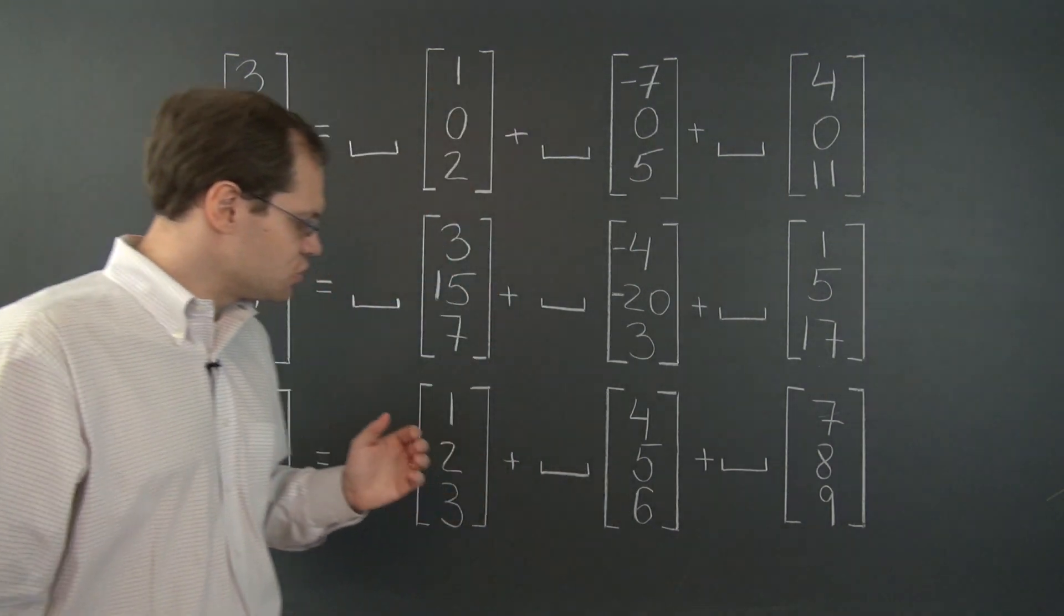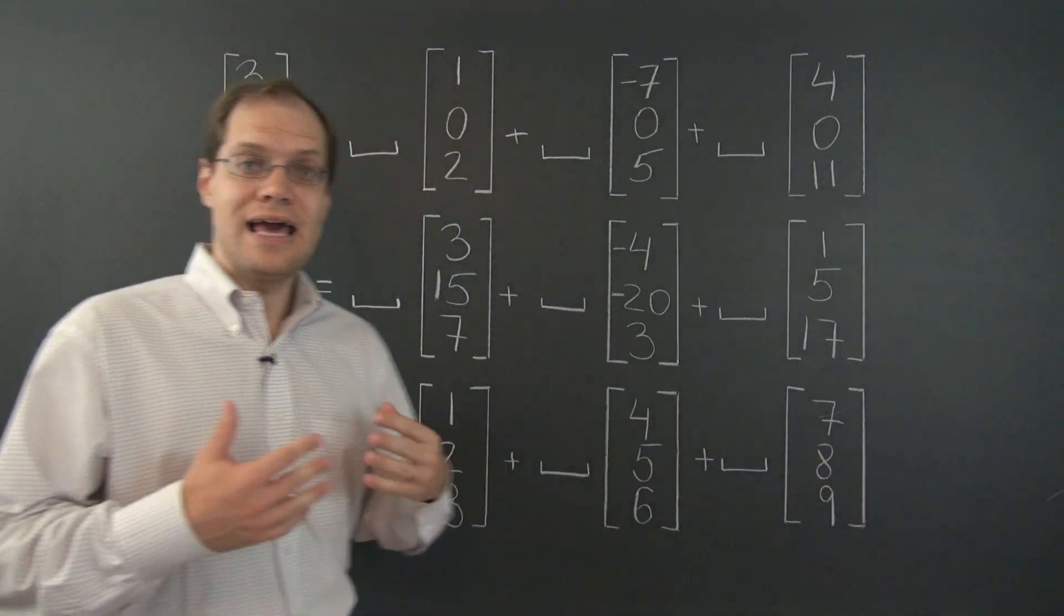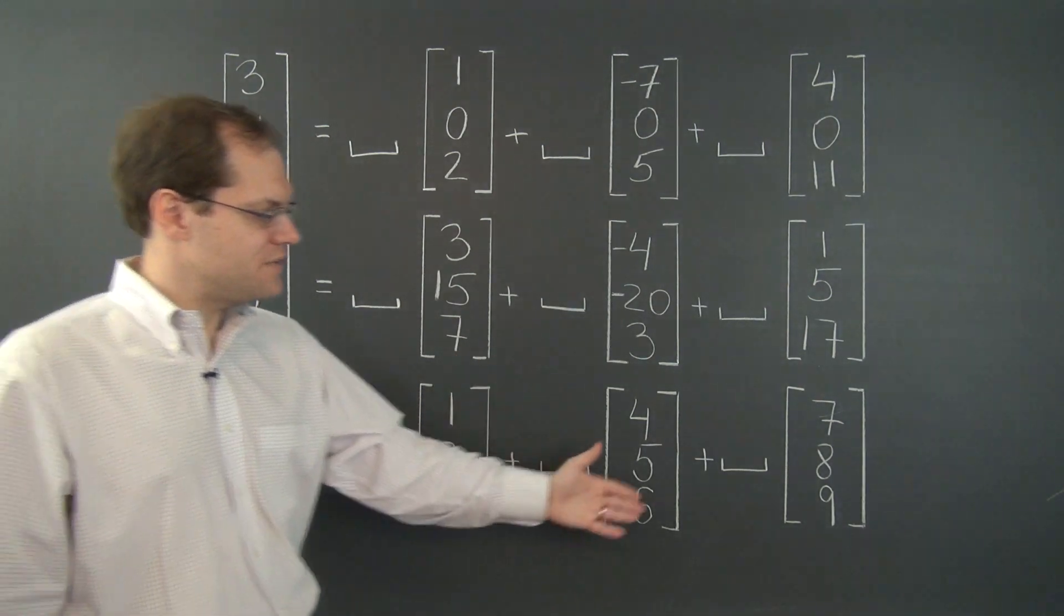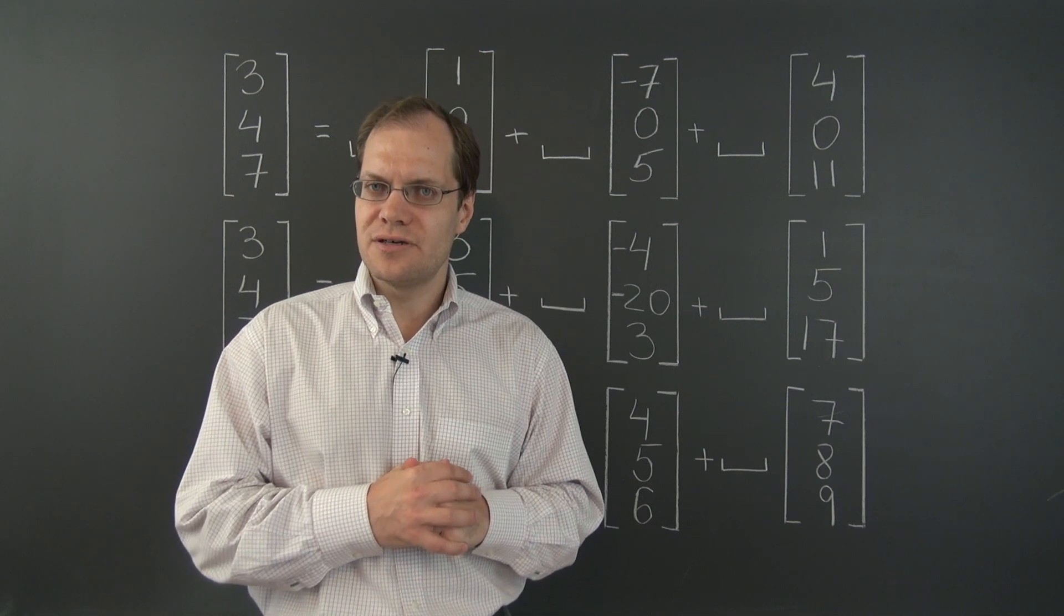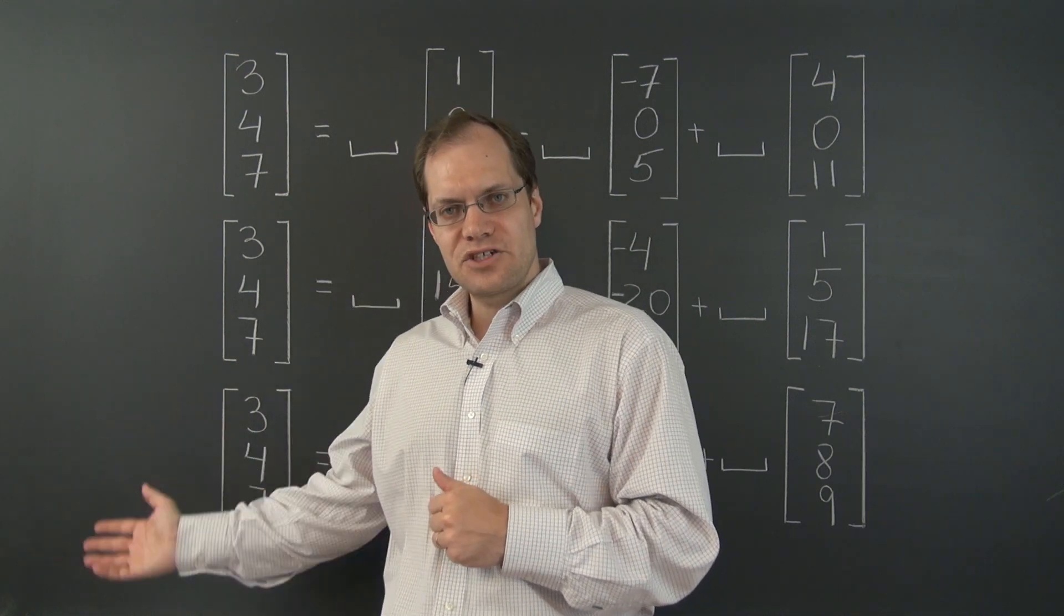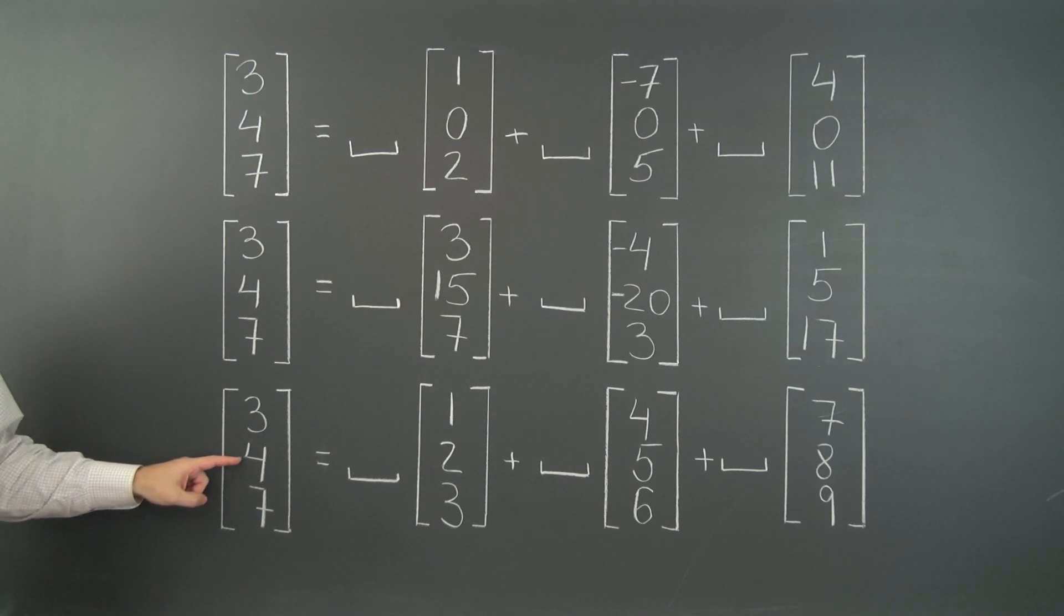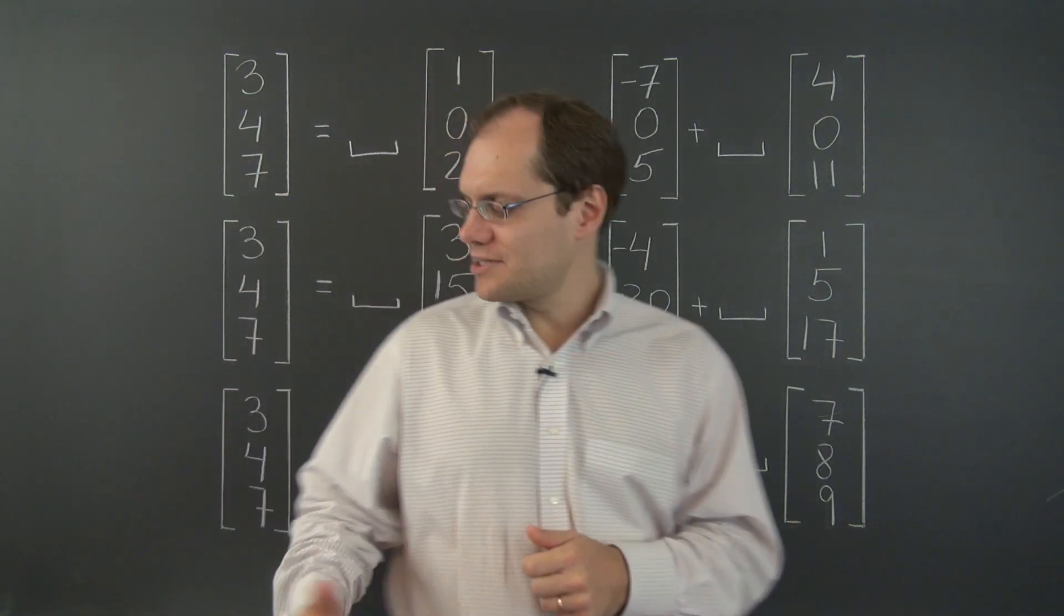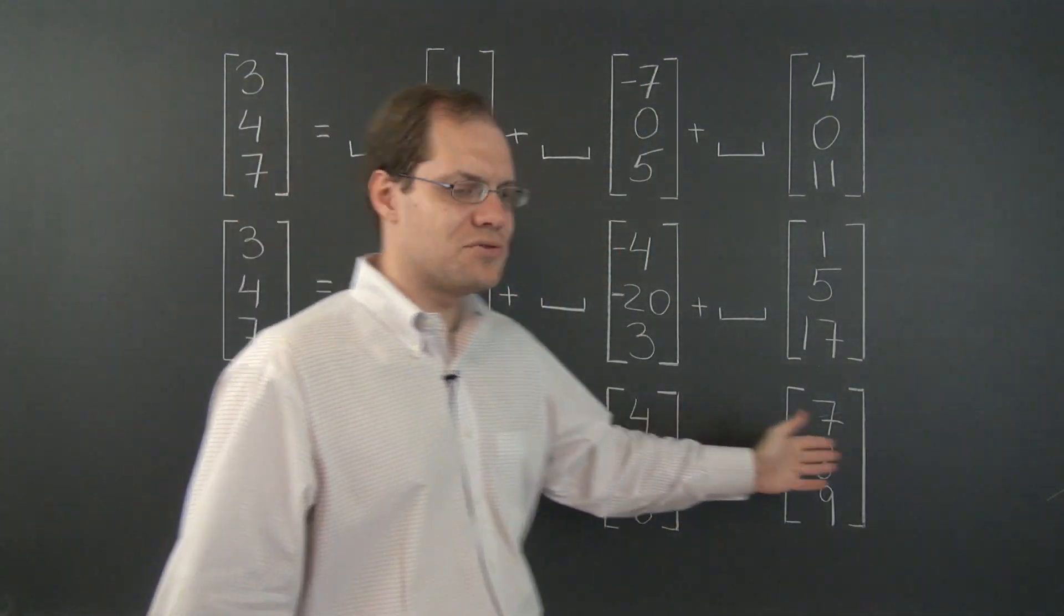Therefore, it is preserved under linear combinations. To put it in other words, any linear combination of these three vectors will result in a vector that has the property that the middle entry is the average of the other two. And now we can test the vector on the other side, the target vector, against that property. Does it have the property that the middle entry is the average of the other two? It does not. Therefore, it is not possible to represent this vector by a linear combination of these three vectors.